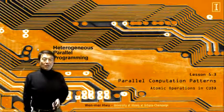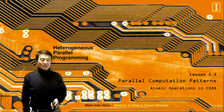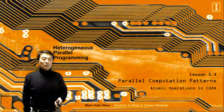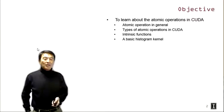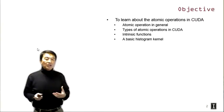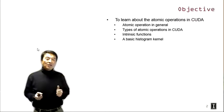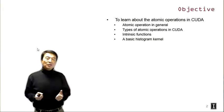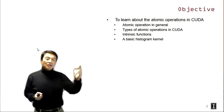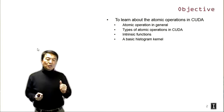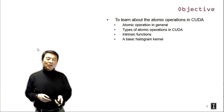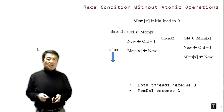Welcome back to the Heterogeneous Parallel Programming class. We are at Lecture 5.3: Atomic Operations in CUDA. The objective is to learn about atomic operations in CUDA — we'll introduce them in general, show the types available in CUDA, introduce intrinsic functions, and show a basic histogram kernel using atomic operations.